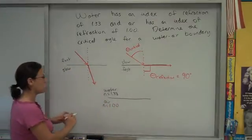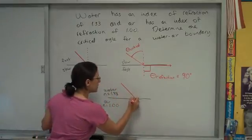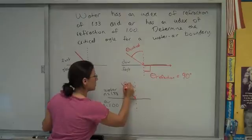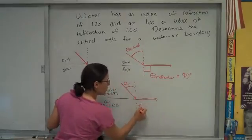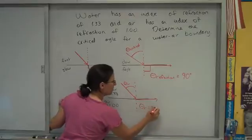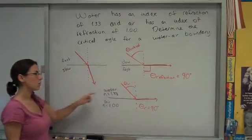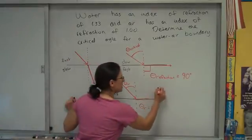So we can look for what the critical angle is, meaning what incident angle, theta CR I'll abbreviate it, makes a refracted angle of 90 degrees. I'm looking for the incident angle, that's my question.